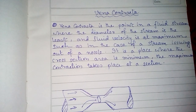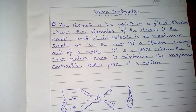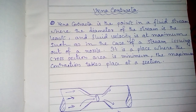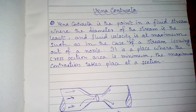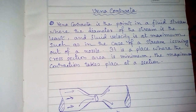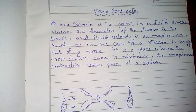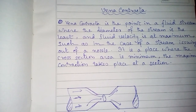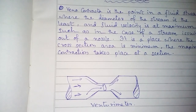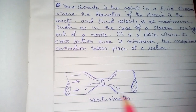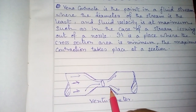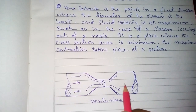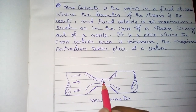At vena contracta, the fluid velocity is maximum. As in the case of a stream issuing out of a nozzle, it is the place where the cross-sectional area is minimum and maximum contraction takes place. If we consider a venturi meter where fluid flows through it, this point is where the cross-section is minimum.